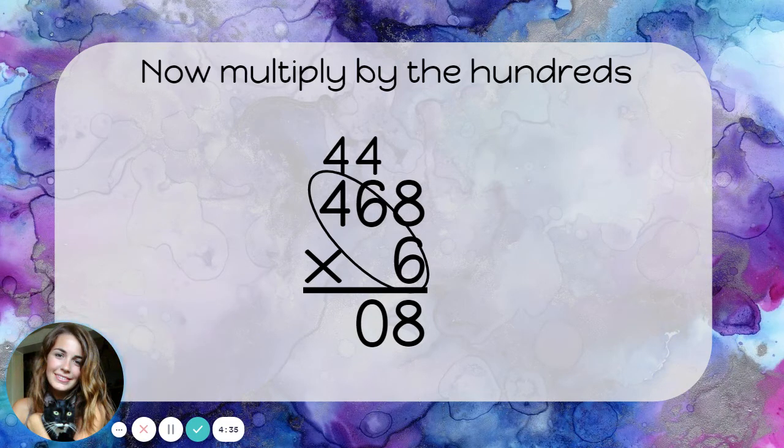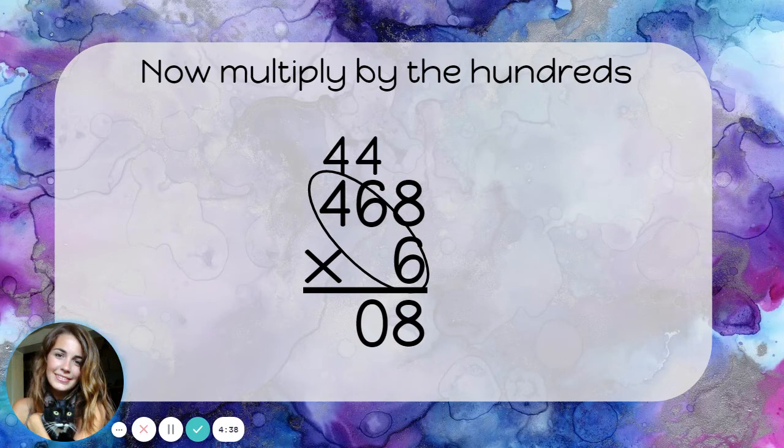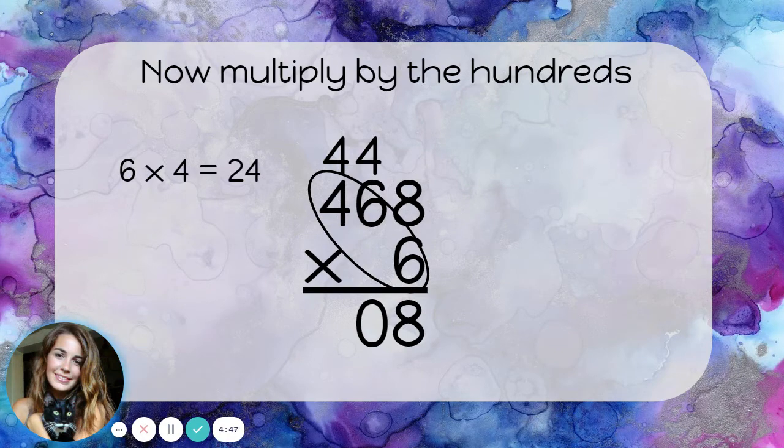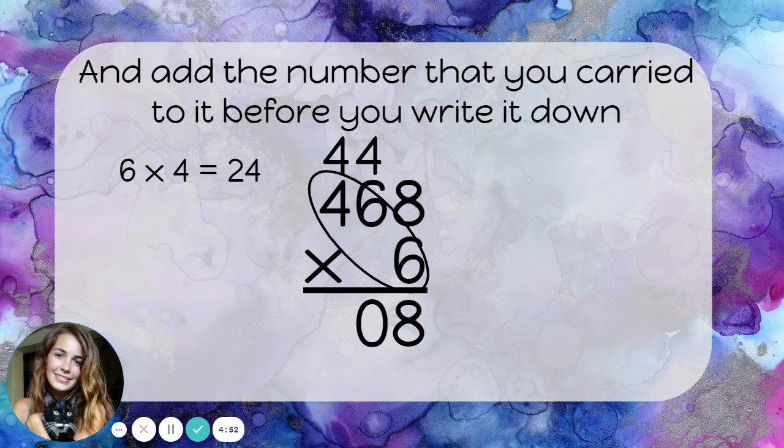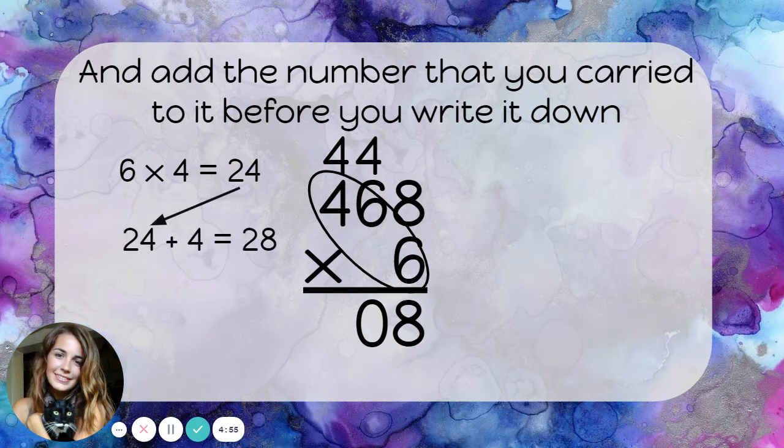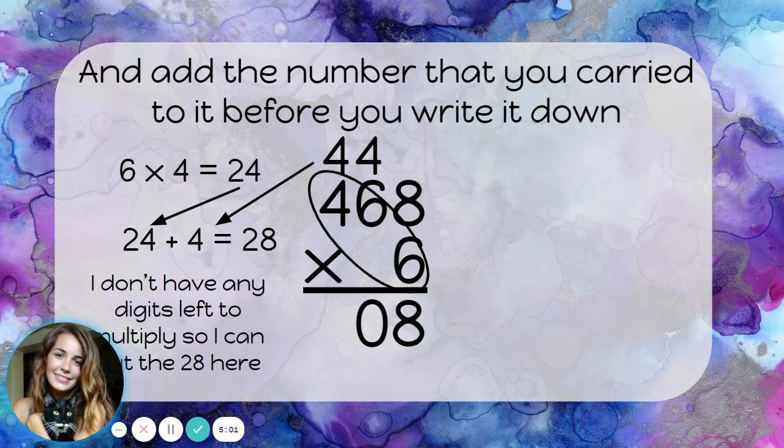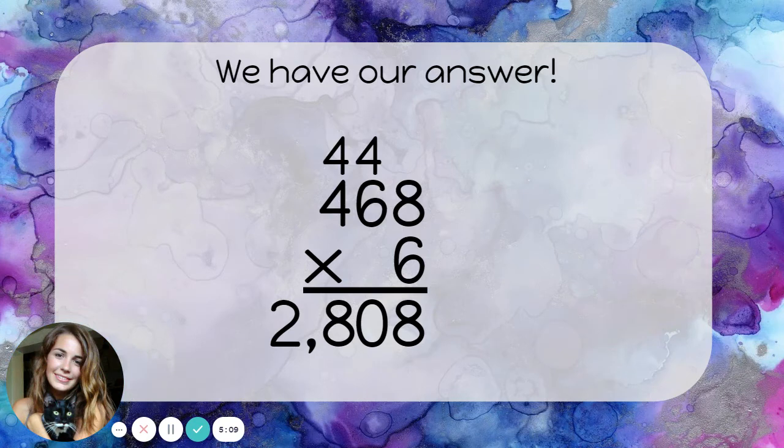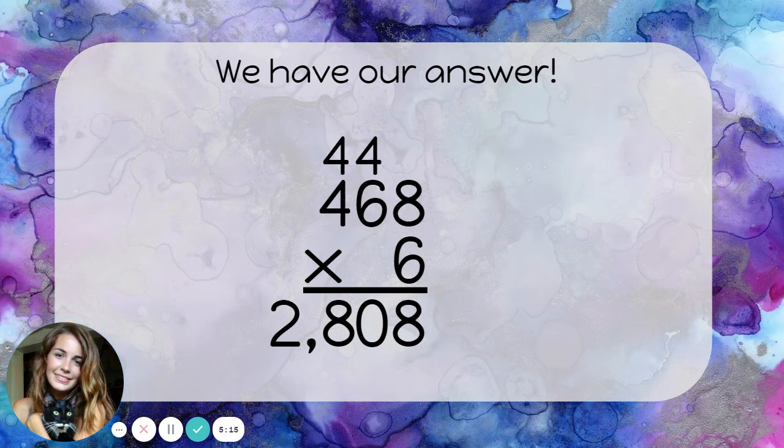Now, I need to multiply one more time. I multiplied by the ones, I multiplied by the tens, and now I'm multiplying my one digit number by the hundreds place. 6 times 4 is 24. But remember, before you write that down, you need to add the number that you carried to it. 24 plus the 4 that I carried is 28. And I don't have any digits left to multiply. I don't have anything in the thousands place. So, I can actually go ahead and put the 28 straight down into my answer. And now we have our answer. 468 times 6 is 2,808.